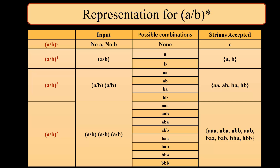Now we talk about representations for (a or b)*. We say (a or b)* is a universal string. For (a or b)^0, that means neither a nor b — we will have only epsilon. For (a or b)^1, we can have two possible combinations: a or b. For (a or b)^2, this means (a or b) into (a or b), so we can have four possible combinations: aa, ab, ba, or bb, and the strings accepted will likewise be aa, ab, ba, or bb.